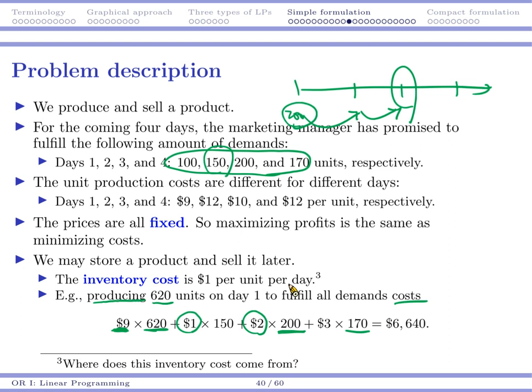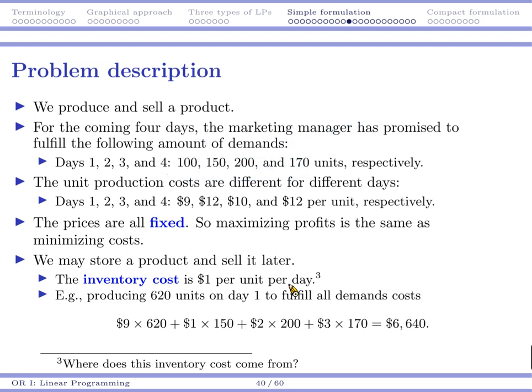So for the last batch, 170 units, each of them I need to pay $3. So overall, the total cost may be calculated, which is $6,640.